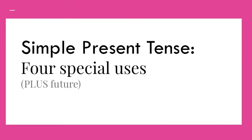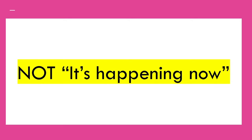Tense shows what time we're talking about, so what times does simple present match? There are four special uses for simple present tense. I also want you to be aware there is a time when we use simple present to talk about the future, but we're not going to study that right now. What's important for you to know: simple present does not mean it's happening right now. If you mean the action is happening now, use present progressive.